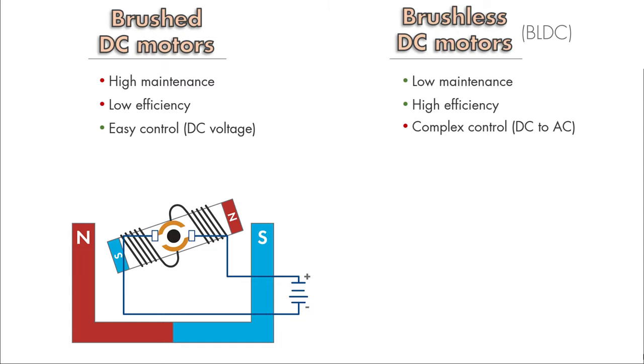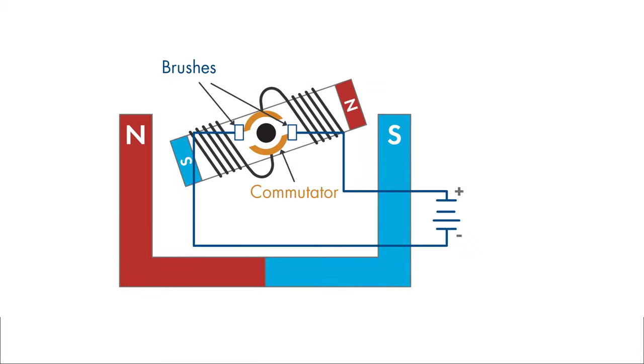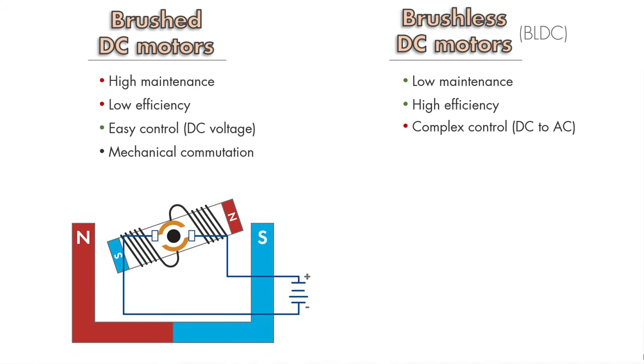In brushed motors, the commutation occurs mechanically where the brushes come in contact with the commutator of the rotor as the motor is spinning. Due to this physical contact, brushes wear out over time, affecting the motor performance.